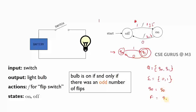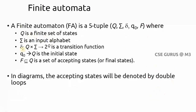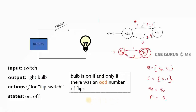So F is the set of final states. Now what is delta — the transition function? From q-naught, if I give input 1, it goes to q1: delta(q-naught, 1) = q1. From q1, if I give input 0, it goes to q-naught: delta(q1, 0) = q-naught. Only two transitions here. These five tuples — Q, Sigma, delta, q-naught, F — together represent the finite automata. This is a very basic example of how a finite automata is represented.